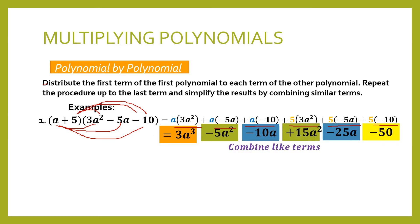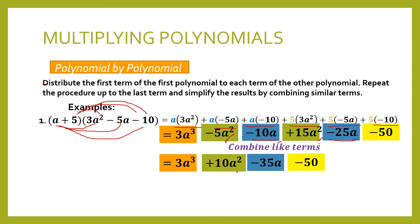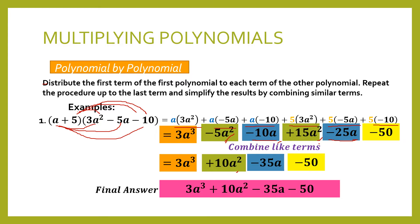Now we check if there are similar or like terms. We have negative 5a squared and positive 15a squared. We also have negative 10a and negative 25a. Our first term is 3a cubed — since there is no similar term, we copy it. Combining negative 5a squared and 15a squared gives 10a squared. Combining negative 10a minus 25a gives negative 35a. We copy the last term, which is negative 50. Our final answer is 3a cubed plus 10a squared minus 35a minus 50.